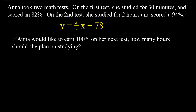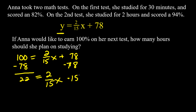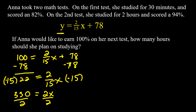If Anna wants to earn 100%, we plug in 100 for y: 100 equals (2/15)x plus 78. Subtracting 78: 22 equals (2/15)x. Multiplying both sides by 15 gives 330 equals 2x. Dividing by 2: x equals 165 minutes.